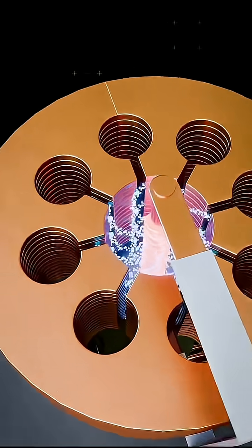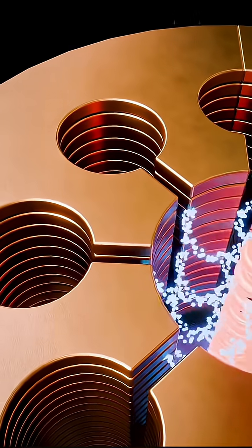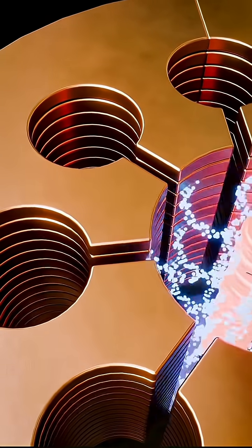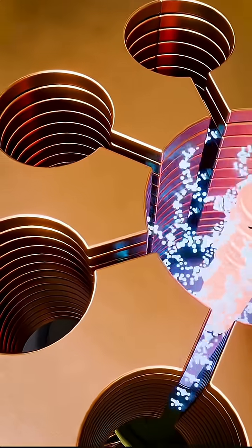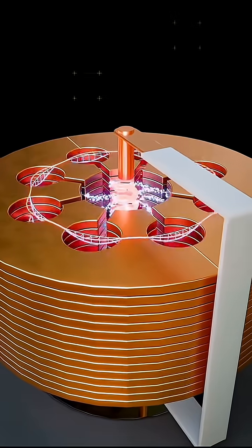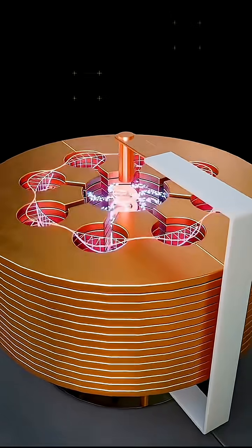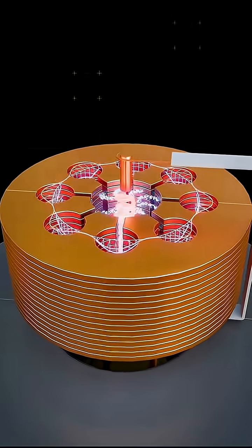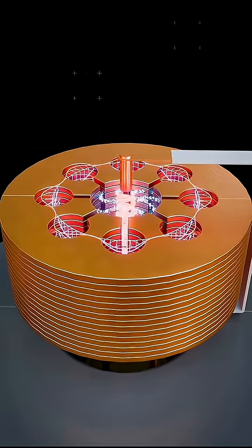These swirling electrons now zip past these tiny metal chambers, called cavity resonators. When the electrons pass by the cavities at just the right rhythm, they transfer energy and generate electromagnetic oscillations inside, building up powerful microwave energy at 2.4 gigahertz.